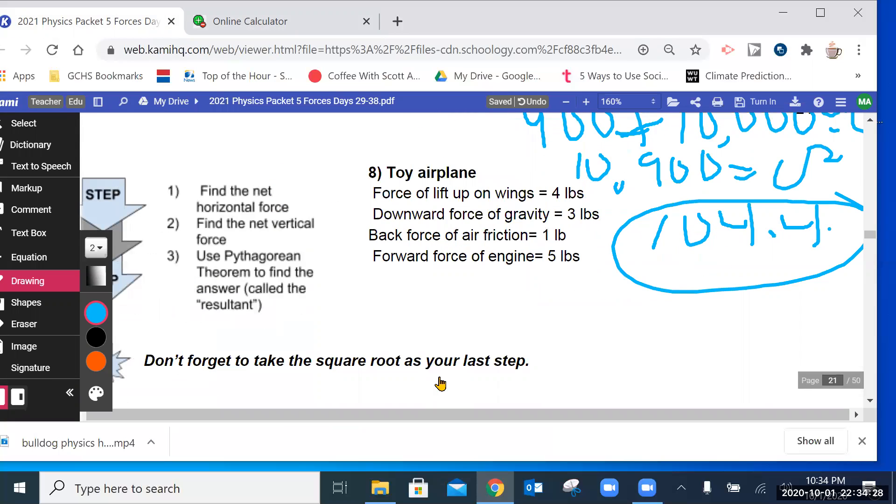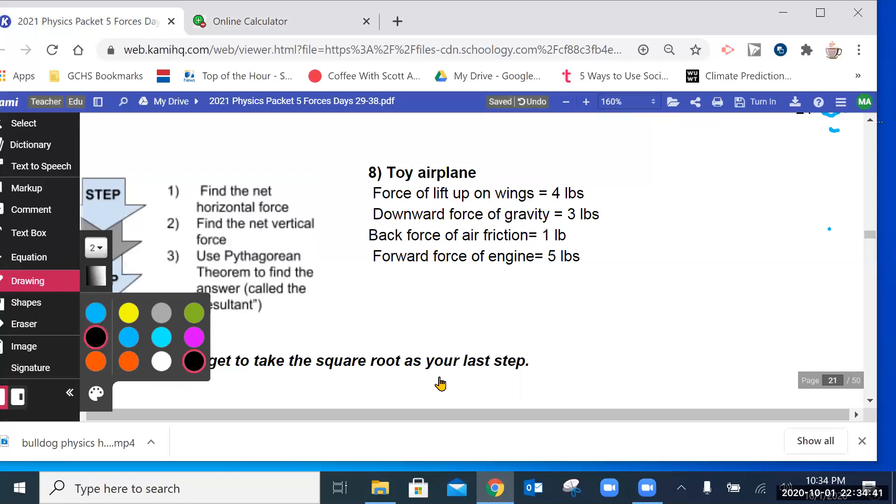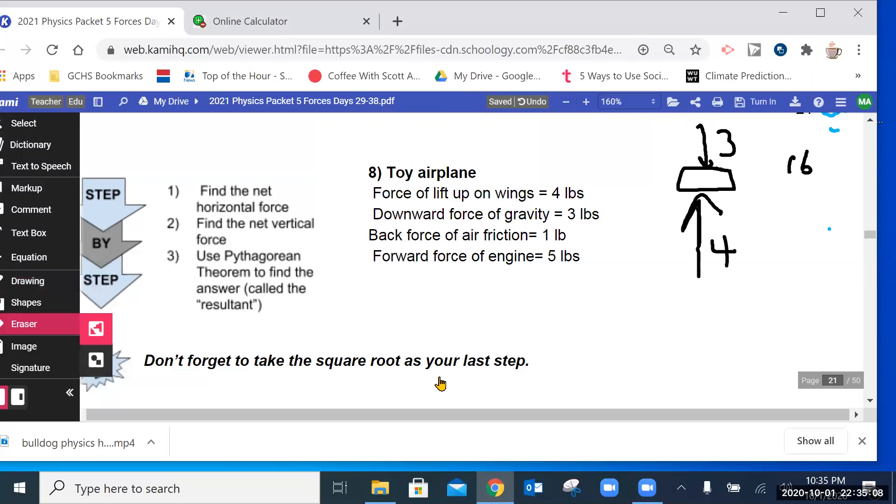Okay. A toy airplane. This has a lot more forces on it. So, let's try to simplify this as much as we can. We have the force up on the wings. I'm going to just draw a box for the airplane. Four pounds going up. Downward force of gravity. A little bit shorter of an arrow, because it's a little smaller of a number. Backwards force. One pound. Now, I need to make this proportional. So, that's too long of an arrow. Need to have it kind of short compared to the three and the four. So, that's one pound. And then I have a forward force of five pounds. So, that's going to be longer than anything else. Okay. Those are the four forces.